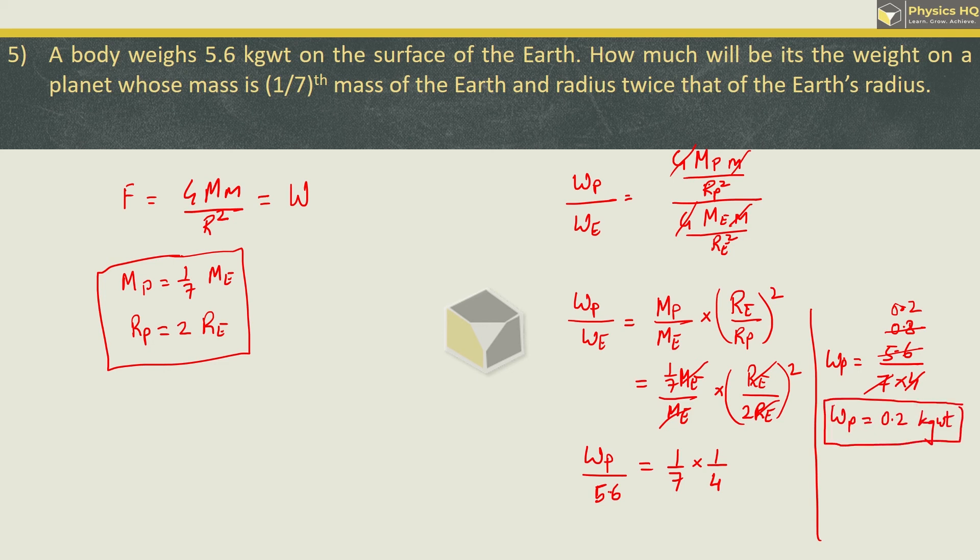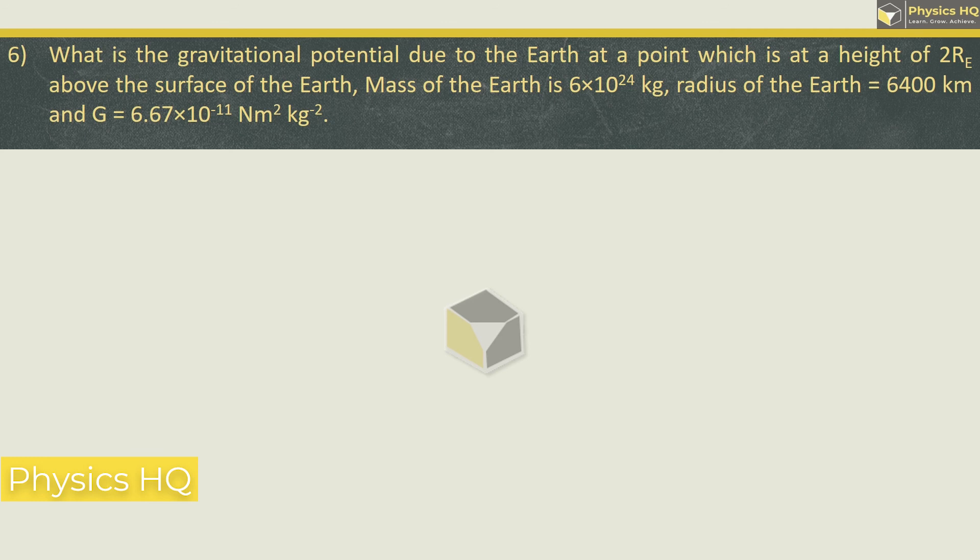What is the gravitational potential due to earth at a point which is at a height of twice the radius of the earth above the surface of the earth? Mass of the earth is given, radius is given, and G value is given. Gravitational potential formula is V = -GM/r. This becomes -6.67 × 10⁻¹¹ × 6 × 10²⁴, where small r is capital R plus the height.